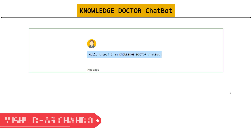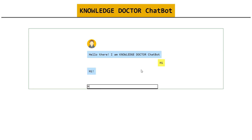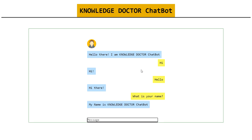Welcome back to another tutorial. In this video, we're going to discuss how you can make a chatbot using Python. This is the demo application built using Python and Flask, the micro-framework. We say hi, it responds 'hi'; we say hello, it says 'hi there'; we say what is your name, it replies 'my name is knowledge dr bot'. In this tutorial we're going to make this, and in an upcoming part we'll build the web app.